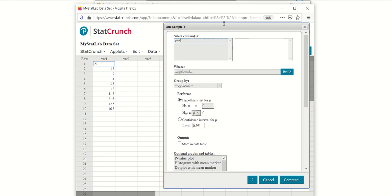We will use the data from column one, variable one. And our hypothesis test, the null hypothesis is μ is equal to 16, and the alternative hypothesis is μ is less than 16.